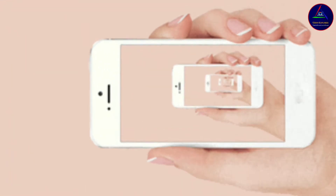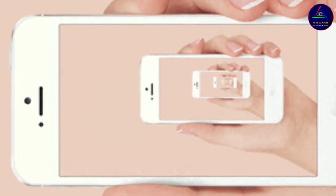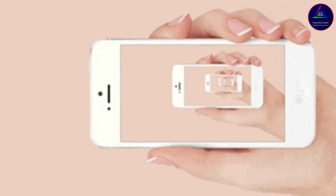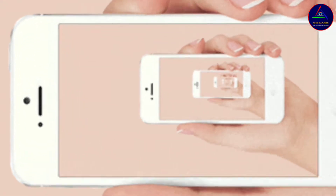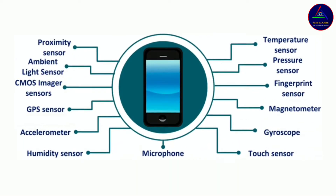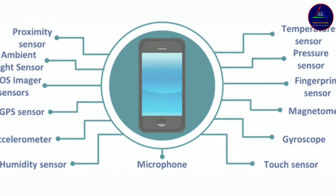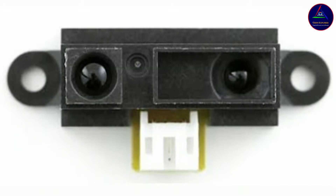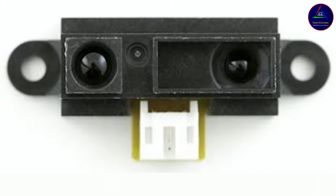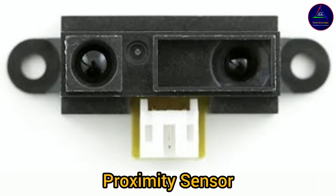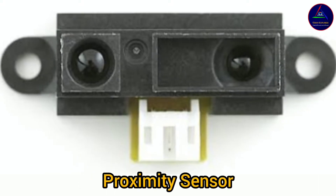Smartphones have many sensors inside them like accelerometer, gyroscope, magnetometer, ambient light sensor, fingerprint sensor, barometer, NFC, and many more. And one of them is the proximity sensor, which is able to detect the presence of nearby objects without any physical contact.